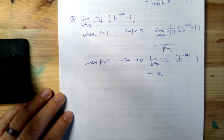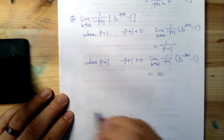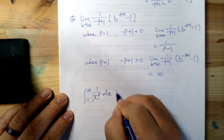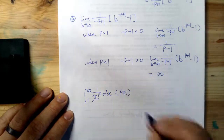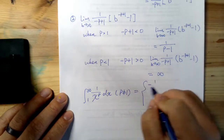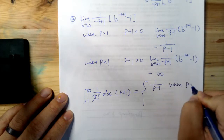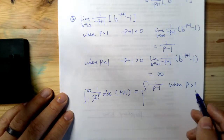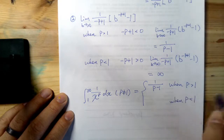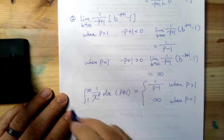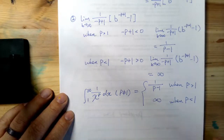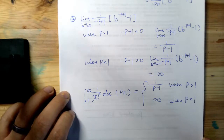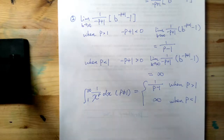So we can summarize what we have here. The integral from one to infinity of one over x to the power of p dx, assuming p does not equal one, converges to one over p minus one when p is greater than one. And when p is less than one, this integral diverges and goes to infinity. So that is a brief example about the Type 1 Improper Integral. Hope you enjoy this video, and thank you for watching.